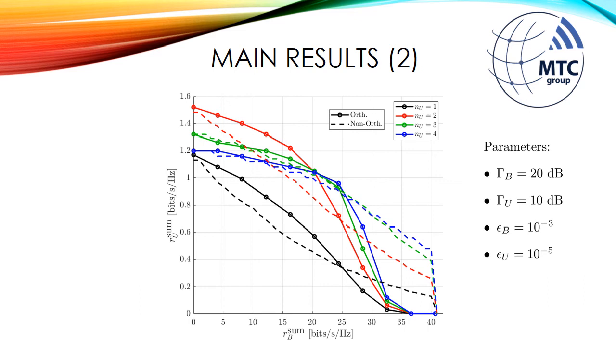Here we have an opposite scenario, where the EMBB devices have better average received SNRs than the URLLC devices. The EMBB devices have an average received SNR of 20 dB, the URLLC devices of 10 dB, and we still have the same reliability requirements from the previous case. In this situation, we observe that in some points of the curves, the orthogonal slicing outperforms the non-orthogonal slicing. For example, for the low values of the EMBB sum rates.